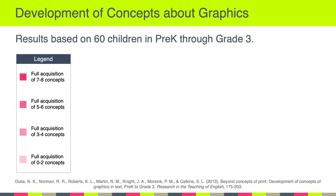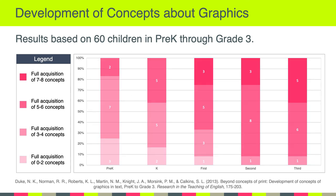The four categories are: students with full acquisition of zero to two concepts, students who understand three or four of the eight concepts, five and six, and then finally all seven to eight concepts. So here are the results — take a look at pre-K, that's the left bar.